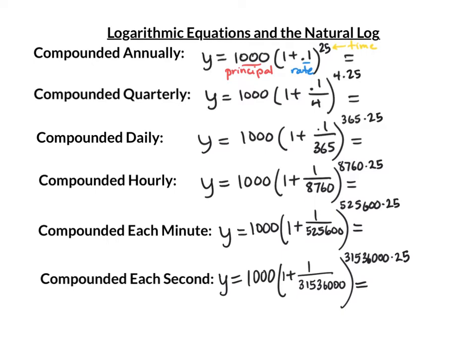Notice that we're starting with $1,000 here — that's our principal, what we're starting with. The rate is 10%, and we're going to do that for 25 years. If we compound quarterly, the difference is we divide the rate by 4, and raise to the power of 4 times 25, or 100.